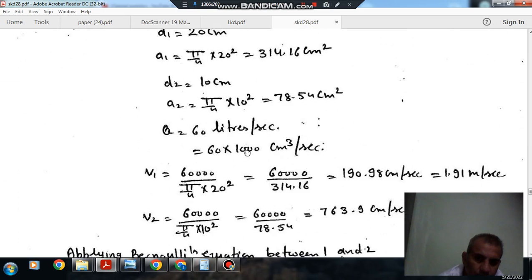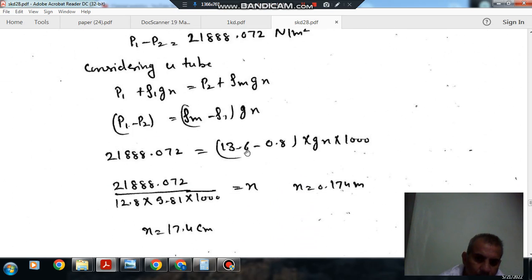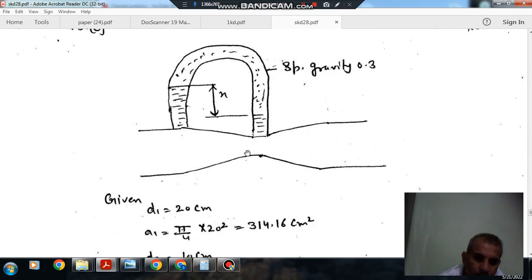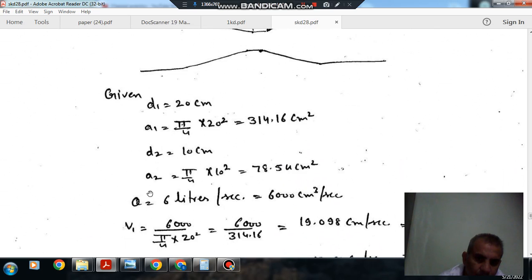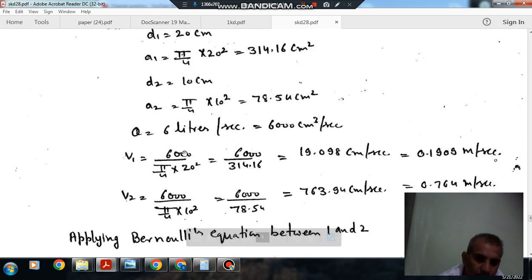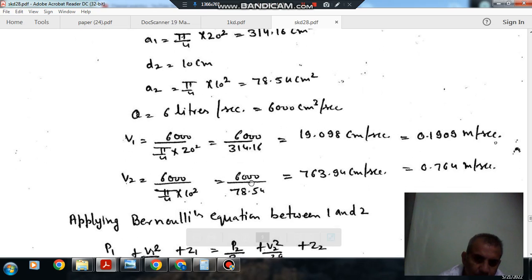Here, D1 is 20 cm, D2 is 10 centimeters and Q is 6 liter per second. From D1 and D2, we can find out A1 and A2. V1 is 6000 divided by 314.16, which is 19.098 centimeter per second or 0.1909 meter per second. Similarly, V2 is 0.764 meter per second.